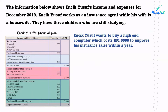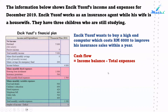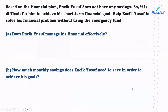Question 4: The information below shows Enjad Yusuf's income and expenses for December 2019. Enjad Yusuf works as an insurance agent while his wife is a housewife. They have three children who are still studying. Calculate his cash flow: income balance of $4,800 minus $1,500 minus $3,300 equals zero. So the cash flow is zero. Based on the financial plan, Enjad Yusuf does not have any savings, making it difficult to achieve his short-term financial goal.